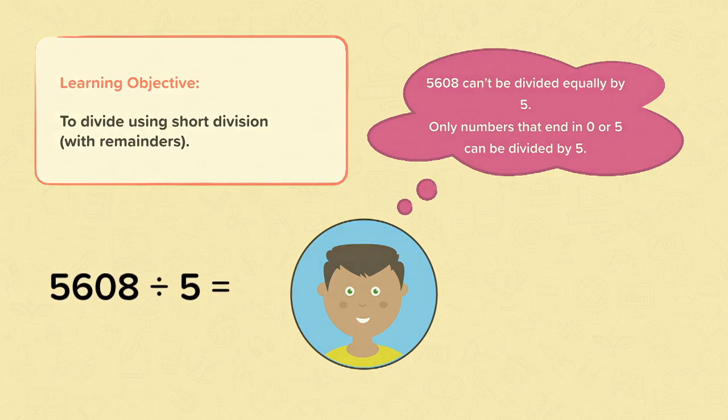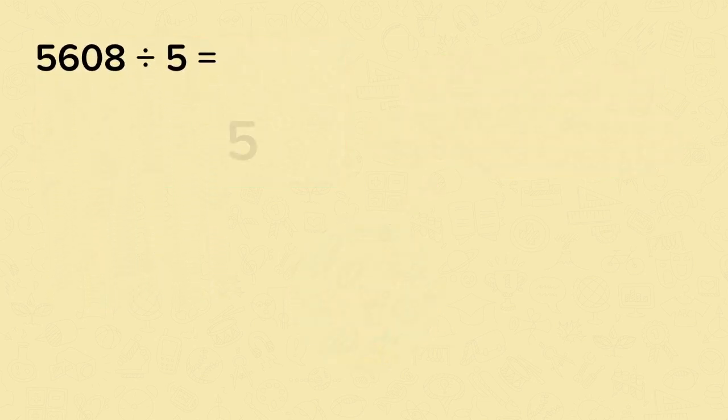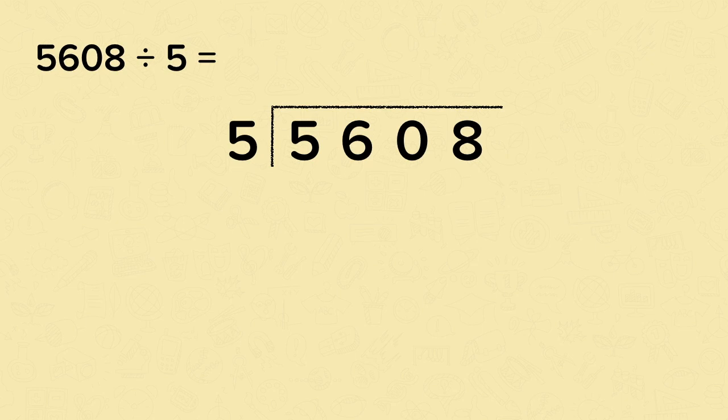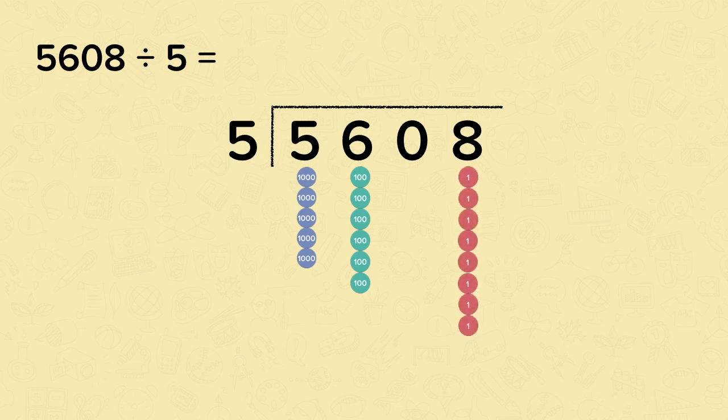Now let's solve this calculation. We'll set it out with the divisor on the outside and the dividend on the inside. And before we begin, we'll make sure that we understand the value of each digit in the dividend. This is the number that we are dividing. So in 5,608, there are five thousands, six hundreds, no tens and eight ones.